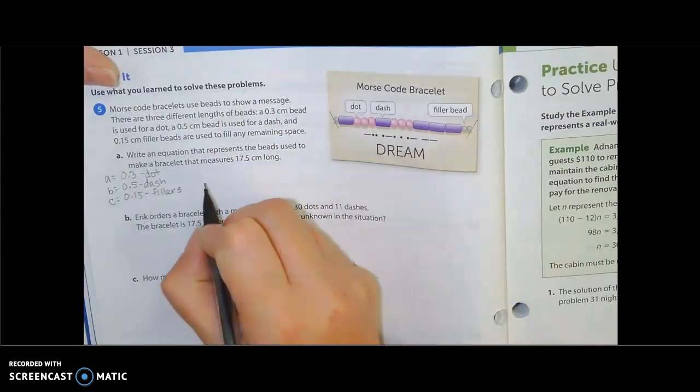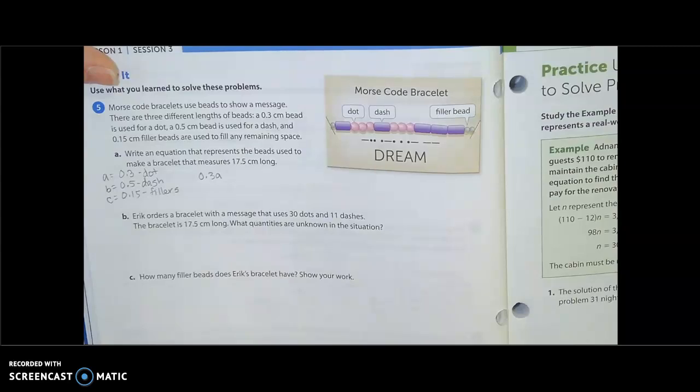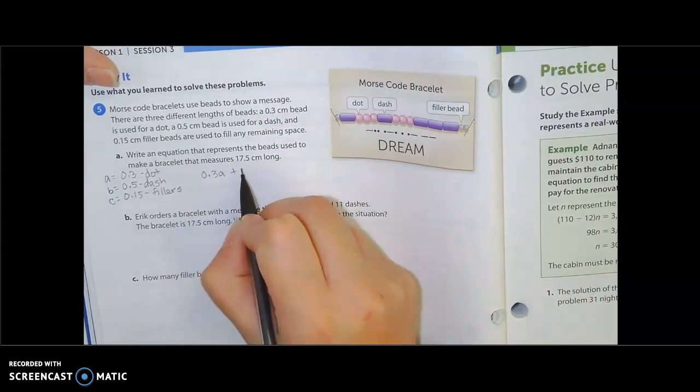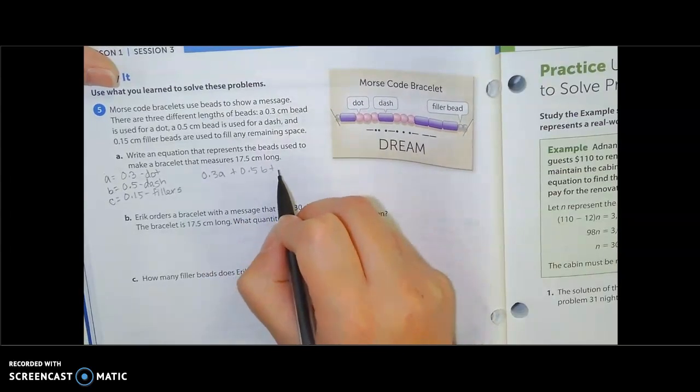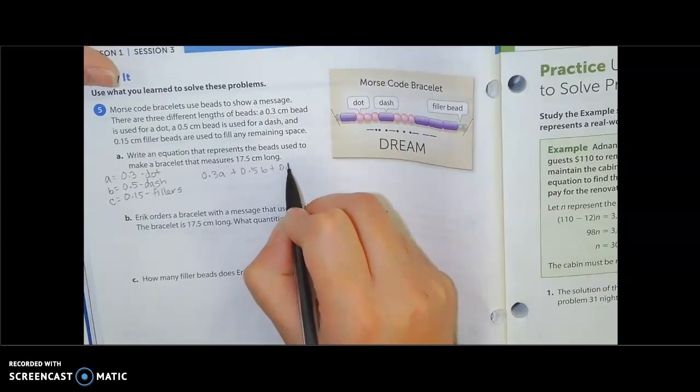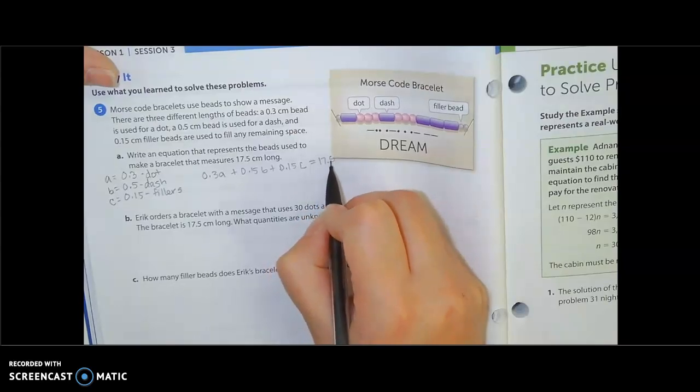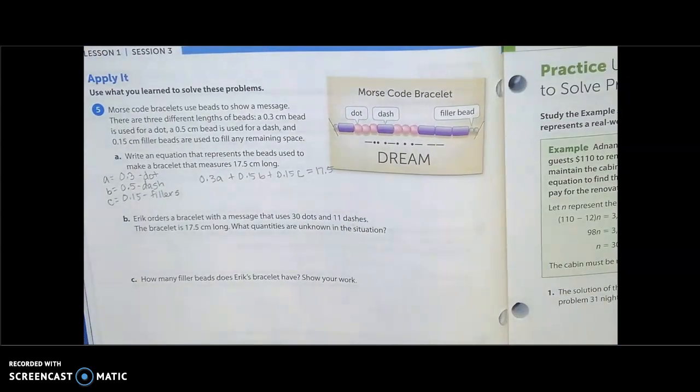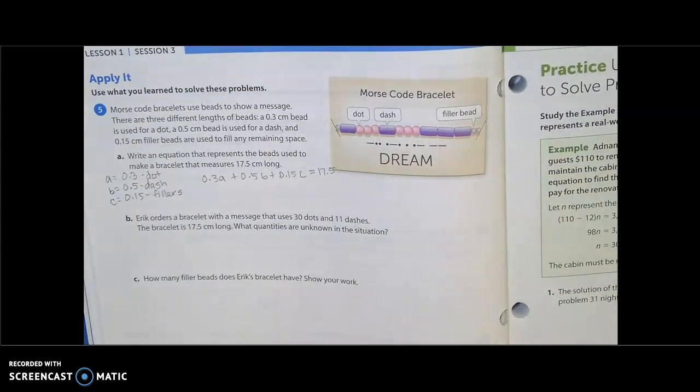To write our equation, we know that each dot is going to take 0.3, and then that would be times my A. So 0.3A, and then I'm going to add with it my 0.5B plus my 0.15C, and that's going to equal 17.5. So that's our equation. That's all it asks, an equation that represents the beads used to make a bracelet that measures 17.5 centimeters long.